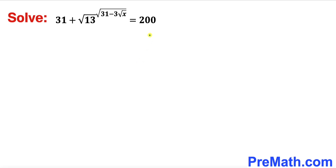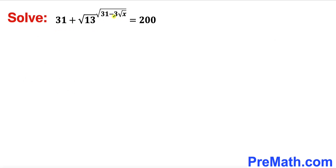Welcome to pre-math. In this video we are going to solve a given exponential equation that involves a bunch of radicals. We are going to solve: 31 plus square root of 13, raised to the power of square root of 31 minus 3 times square root of x, equals 200. Our task is to find the x value.